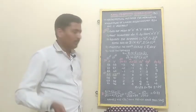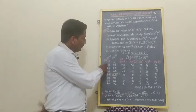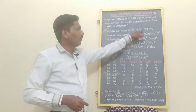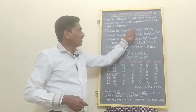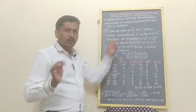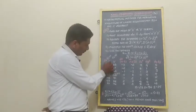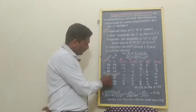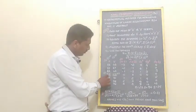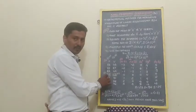Now we will start with the calculation part — finding the mean of the x and y series, which is the first step. The assumed mean for x is 67.